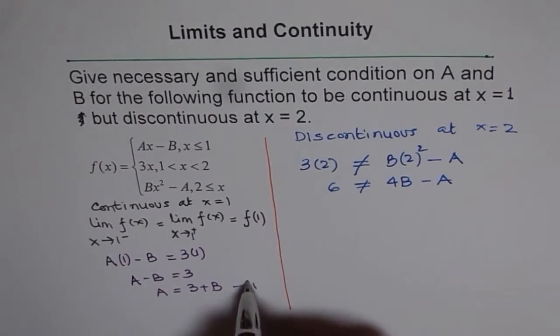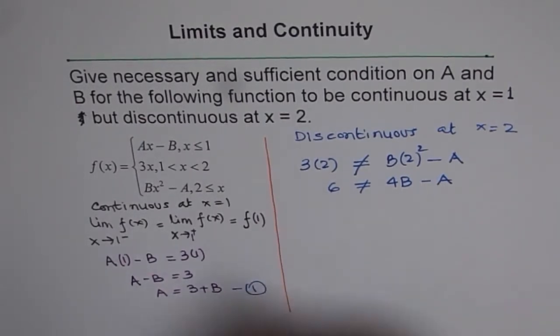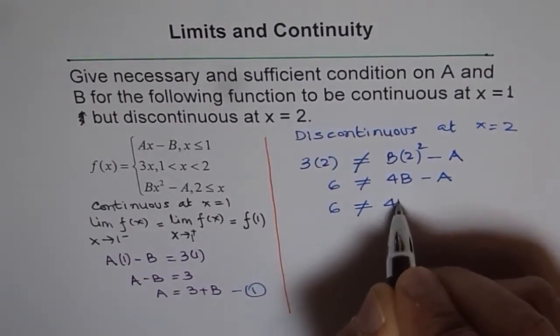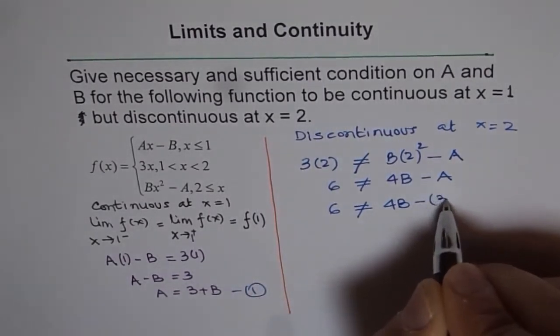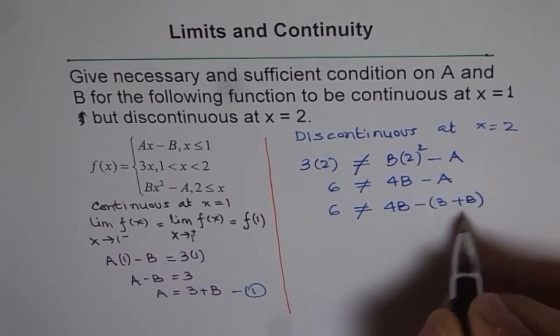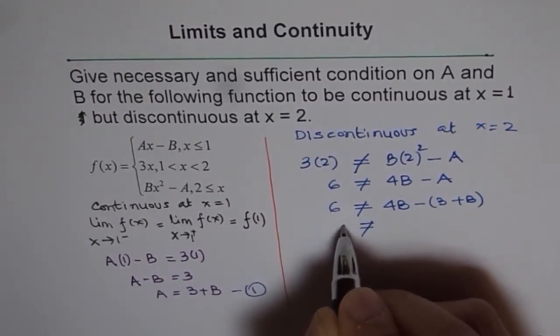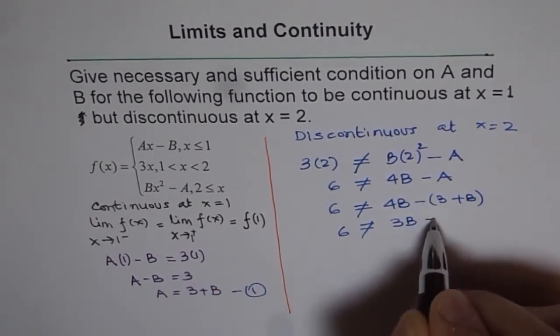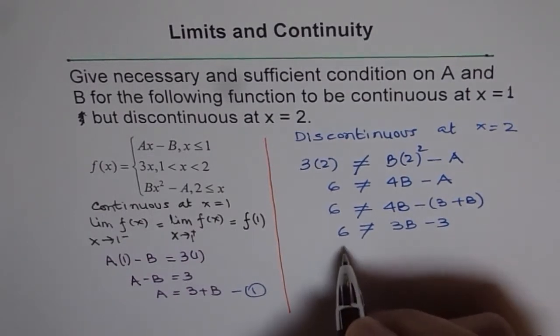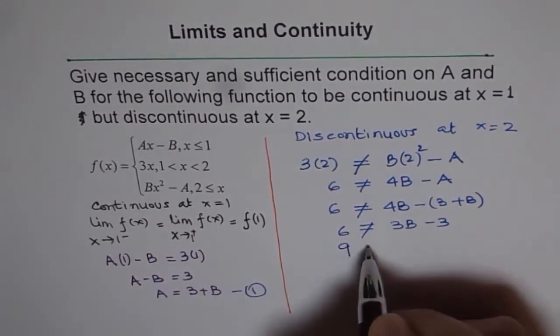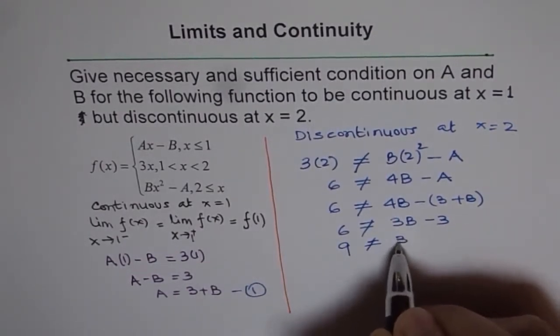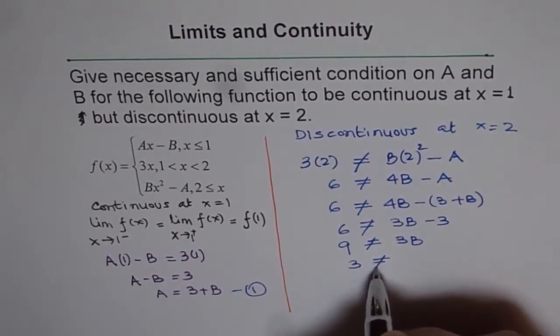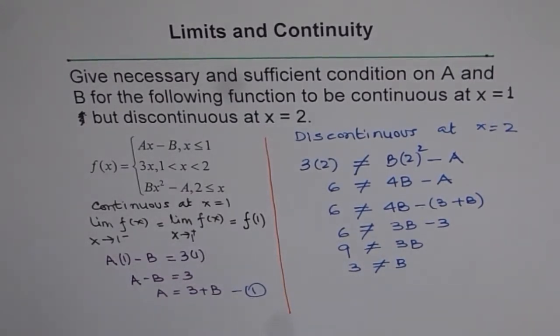Now we know A is 3 plus B. So we can substitute this value and solve for B. So 6 is not equal to 4B minus, within bracket, 3 plus B. And when we bring 3 to this side, then it becomes 6 plus 3 is 9 is not equal to 3B. Or dividing by 3, we get 3 is not equal to B.